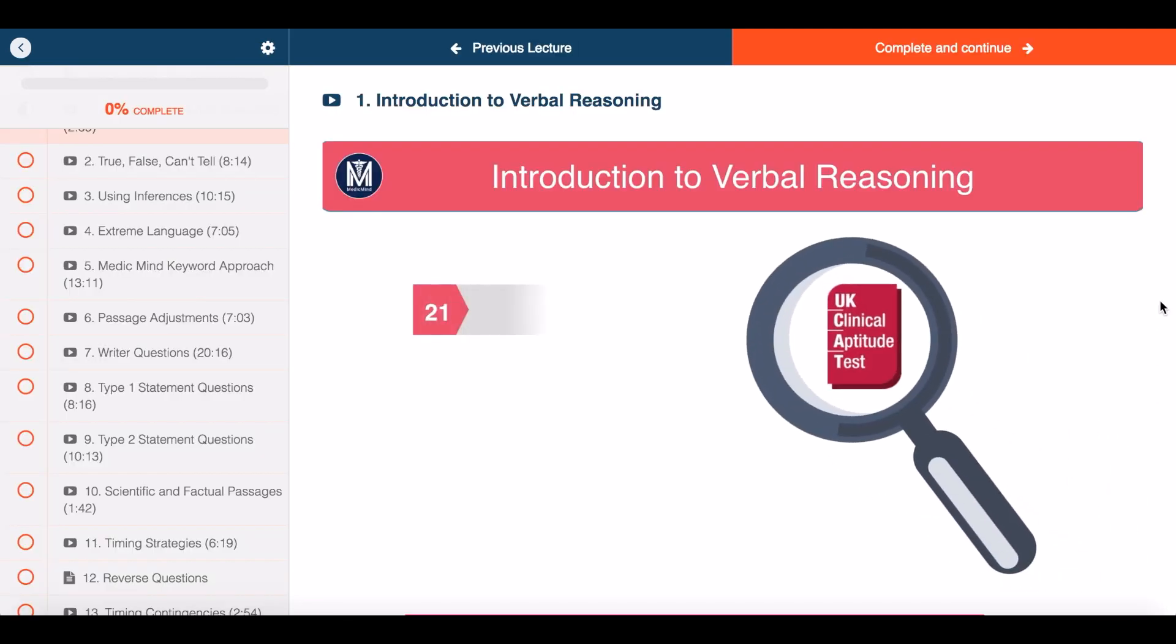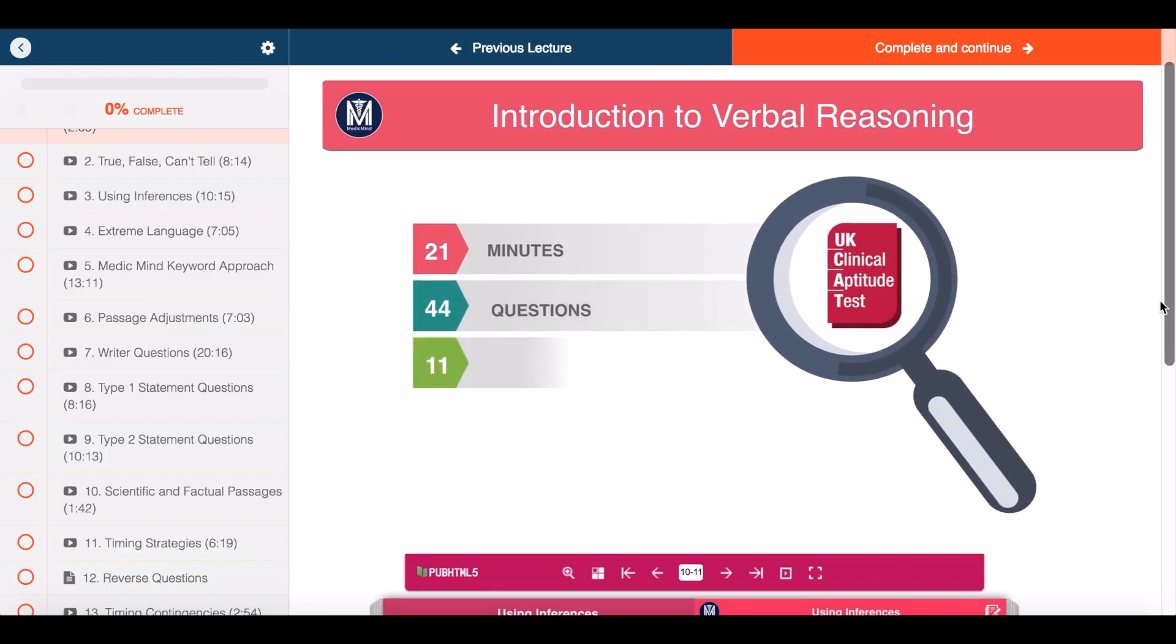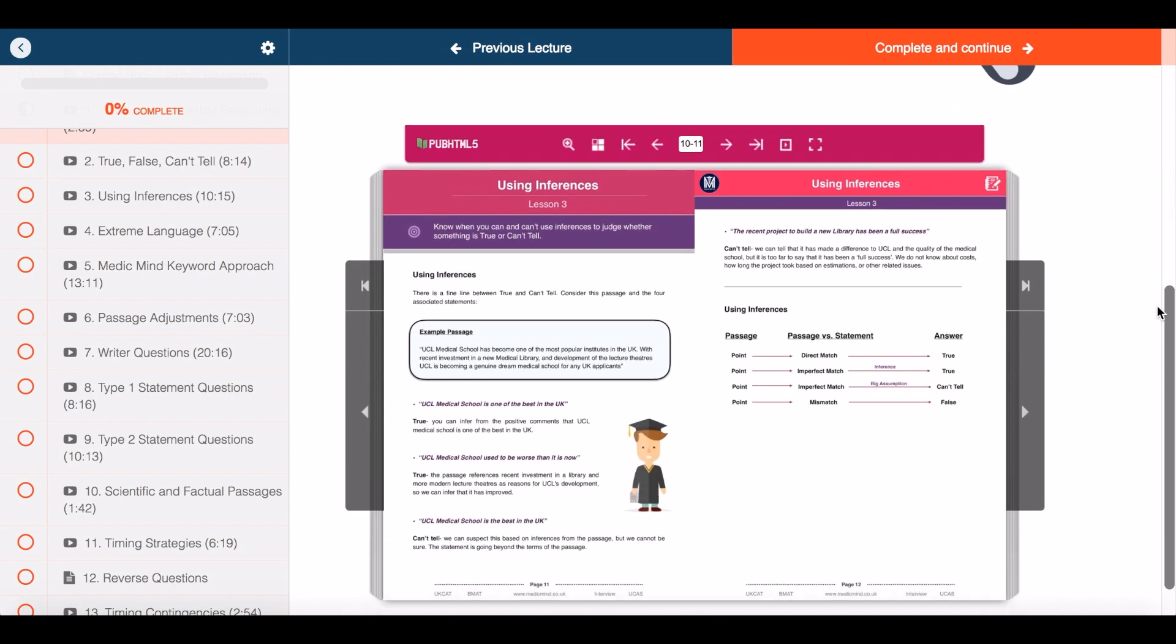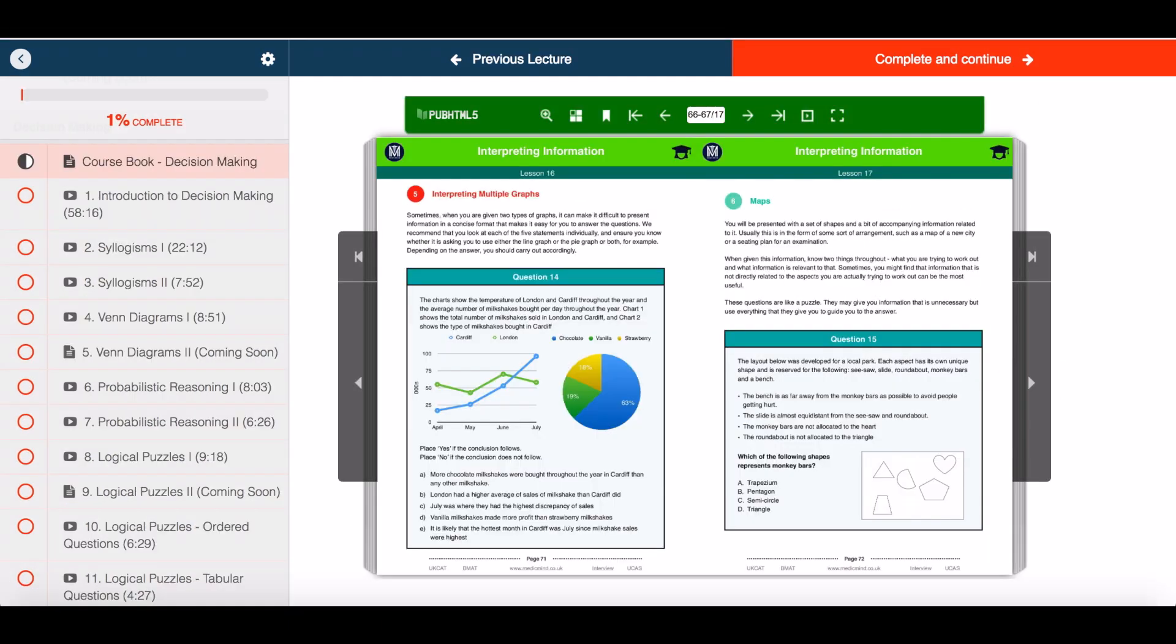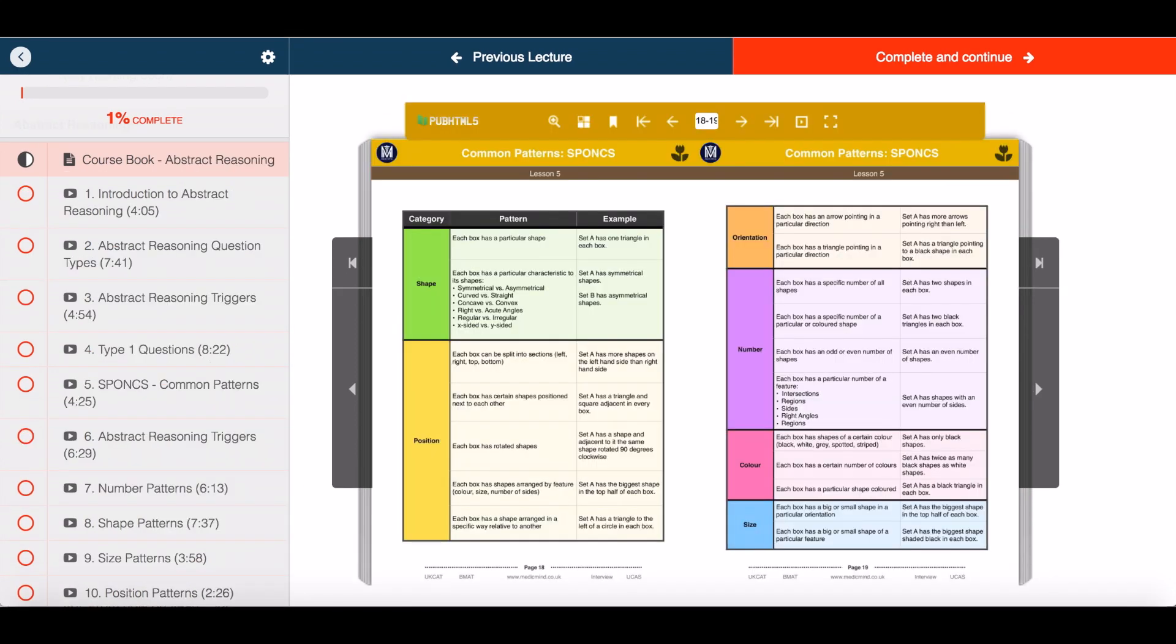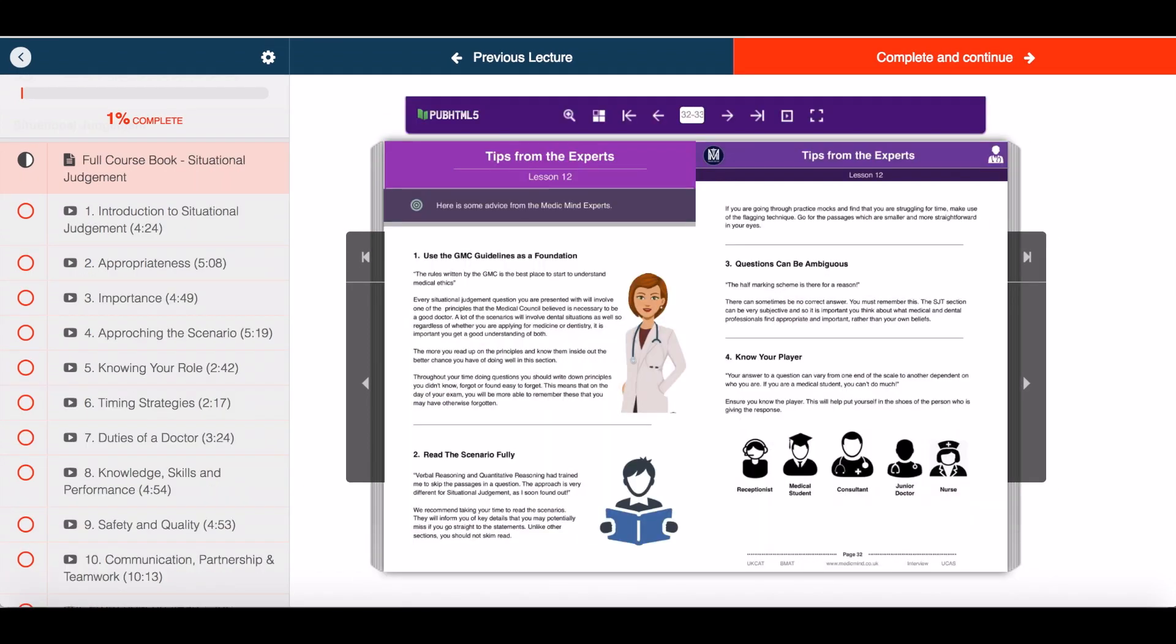You're free to ask as many questions as you'd like to our teachers and with each tutorial you can read along using our five UKCAT ebooks covering 500 pages of theory and questions to guide you every step of the way.